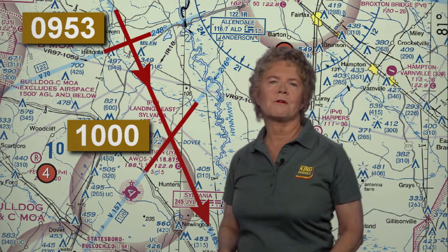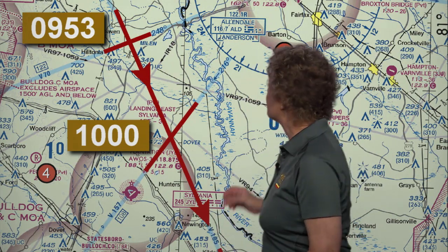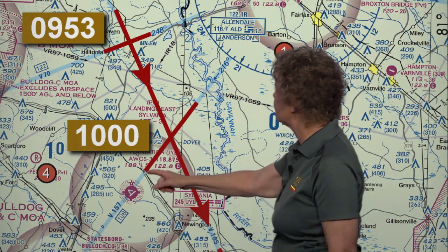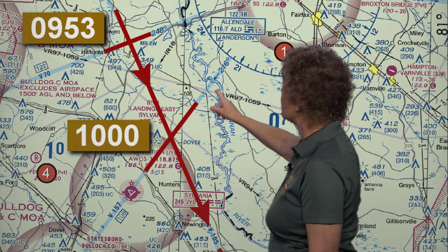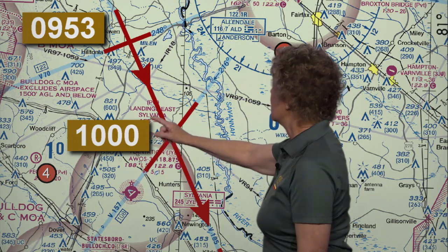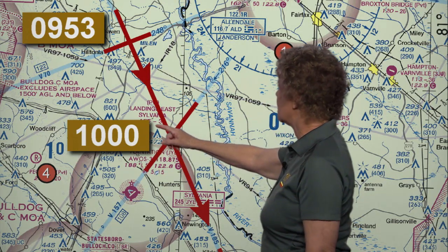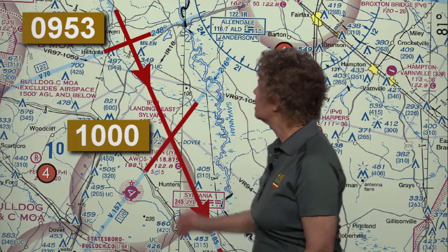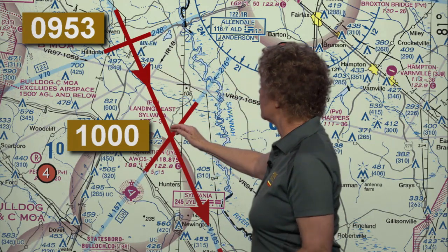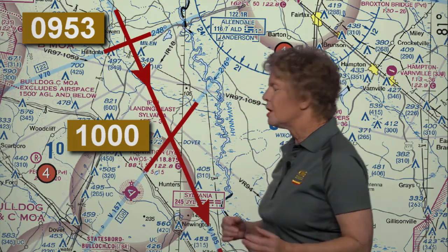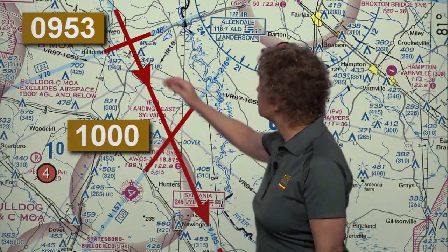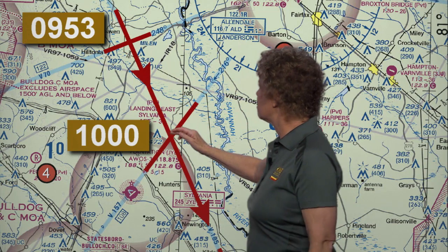Our second checkpoint is the 216 radial off of the Allendale VOR — the same VOR. Again, that's an airway, so the line is already drawn on the chart for us, and we cross that at 10 o'clock. Our time between those two checkpoints, from 9:53 to 10 o'clock, is seven minutes. It takes us seven minutes to fly between those two checkpoints.